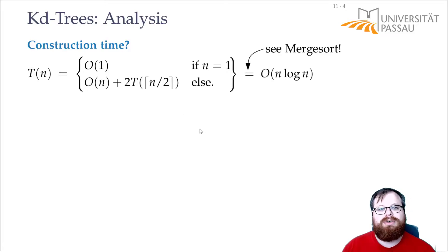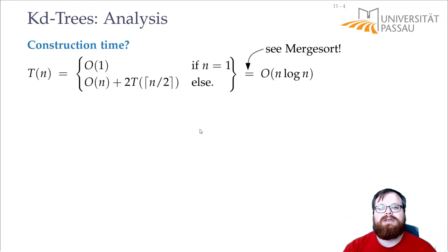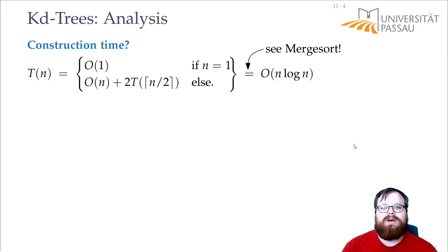In merge sort, you also take the whole set, split it into two parts, and then recursively sort both of them. So we have exactly the same running time: O(n log n). What about the space?